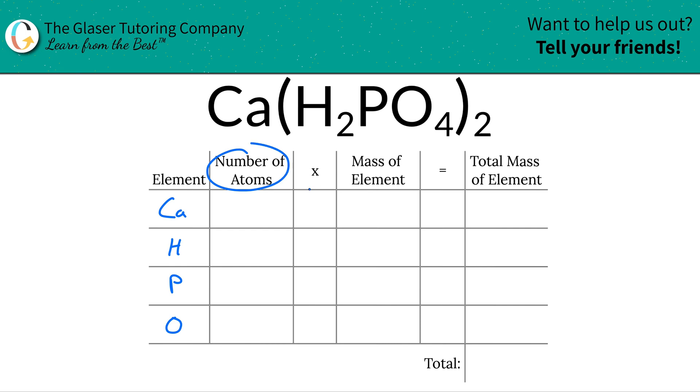Next is to consider the number of atoms of each element we have. So there is a subscript of one here for calcium. So that means that calcium has one atom in calcium dihydrogen phosphate.